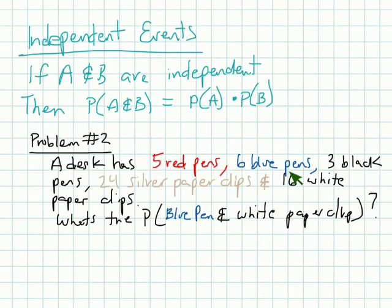Let's look right here. So, desk has 5 red pens, 6 blue pens, 3 black pens, 24 silver paperclips, and 16 white paperclips. What's the probability of event A? Out of my pens, I pick a blue one. And out of my paperclips, I pick a white one. Well, what's the probability of picking a blue pen? That would be 6 out of, how many pens are there? 14 pens.